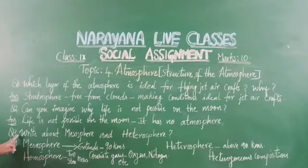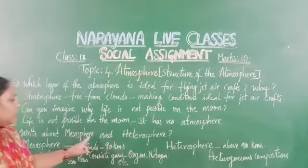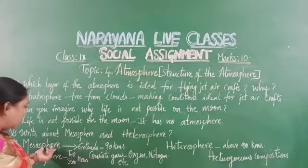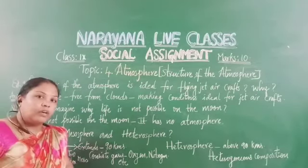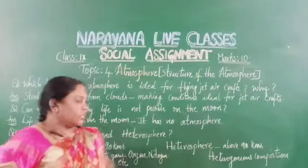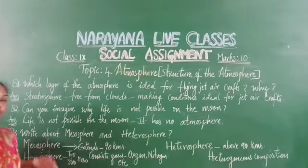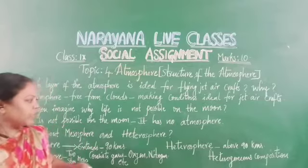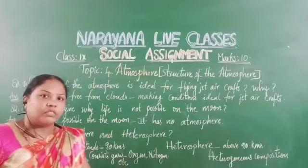Let us go to question number 3: the range about mesosphere and thermosphere. Mesosphere is also a layer of the atmosphere which extends till a height of 90 kilometers, whereas the thermosphere extends above 90 kilometers. Mesosphere, troposphere, and stratosphere are all part of the homosphere, whereas the thermosphere has a heterogeneous composition.